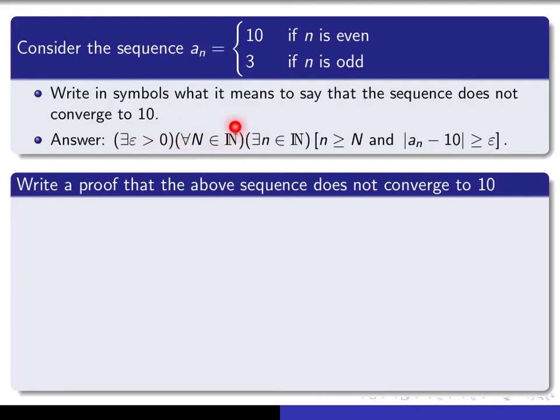Now somebody gives you this N and how are you going to choose the little n since you want this to be bigger than the number epsilon? It will work provided you just simply choose n to be any odd integer that's bigger than the given natural number capital N. So that's the idea of the proof. Why don't you put your video on pause and see if you can write it up and when you come back you can compare your answer to mine.